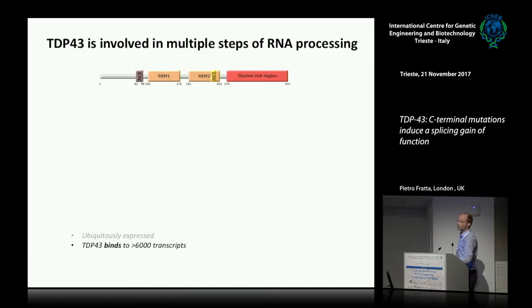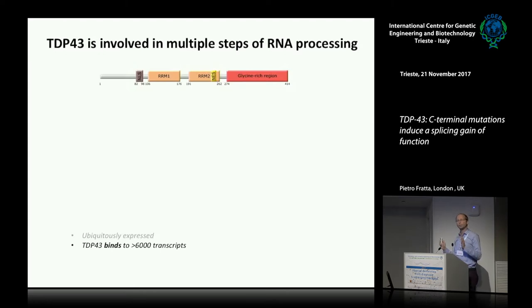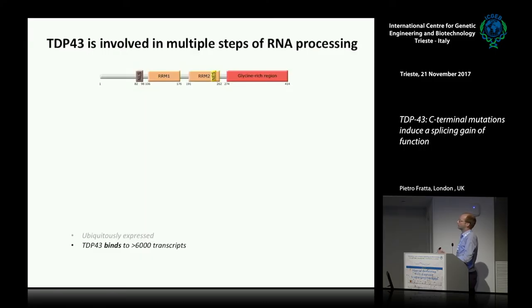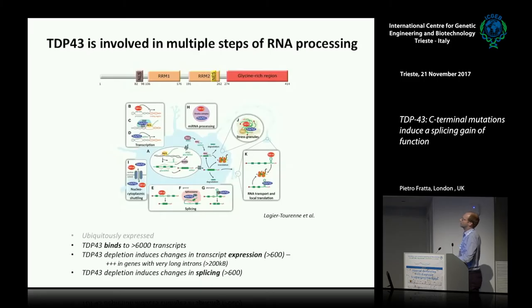TDP-43 is an RNA-binding protein, and most of what we know was from work done here in Trieste by Emanuele and Tito Baralle's lab. For this talk, we need to focus on the fact that the protein has two RNA-binding domains, RRM1 and RRM2, and a C-terminal glycine-rich low-complexity domain where human mutations are basically all located. TDP-43 binds to RNA extensively — more than 6,000 transcripts — and is involved in most steps of RNA processing: transcription, splicing, microRNA processing, transport, and stress granules. Our lab focuses on splicing and transport, and we'll talk about splicing today.